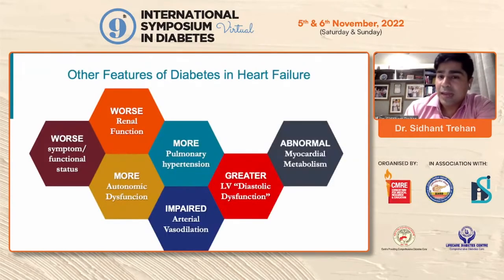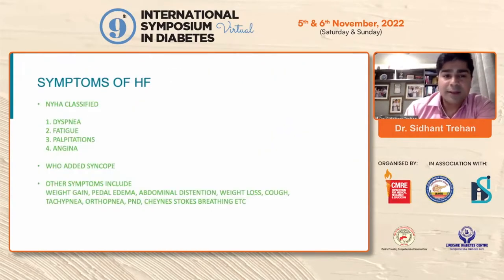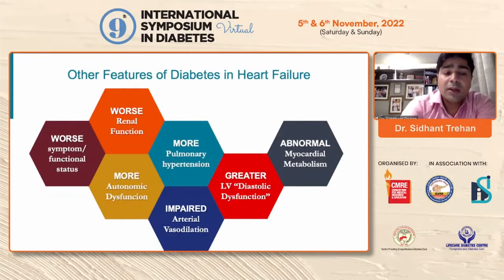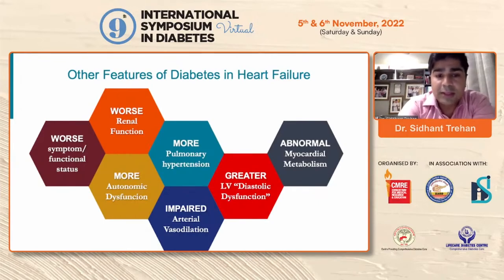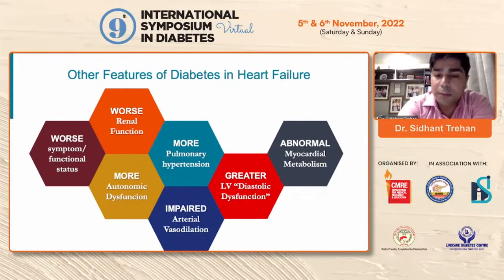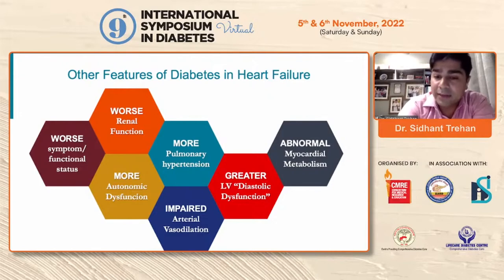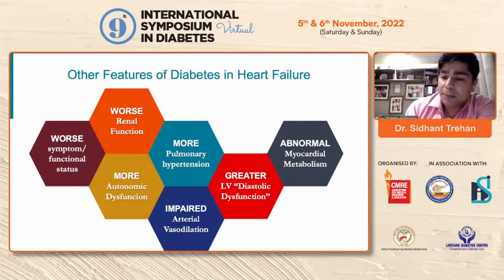Other features of diabetes and heart failure include: patients have worse symptoms and functional class, worse renal functions, more autonomic dysfunction, more pulmonary hypertension, impaired arterial vasodilatation, greater LV diastolic dysfunction, and abnormal myocardial metabolism.